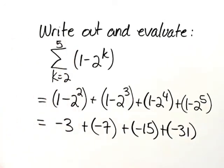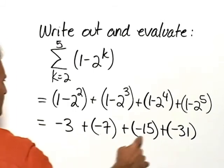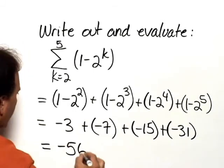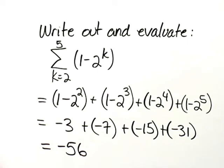And now we simply add together these four negative numbers, which gives us a value of negative 56.